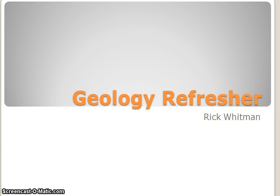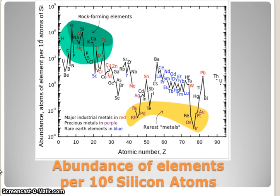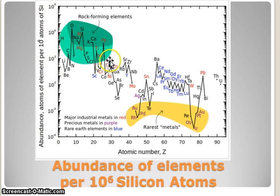Hello, this is Rick Whitman with a refresher in geology and some terms. To start, basically there are a lot of items on Earth. If we know the specific identity of an atom we call it an element, hence the periodic table of the elements. And here you find, compared to silicon, how frequently you will find other elements on the earth.